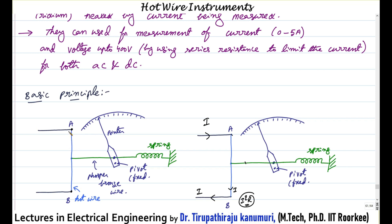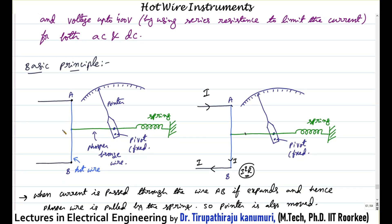Let us take the basic working principle. Between point A and B, a resistance material called a hot wire is connected here. From the center of this hot wire at point C, I have connected one phosphor bronze wire which is connected through the pointer.